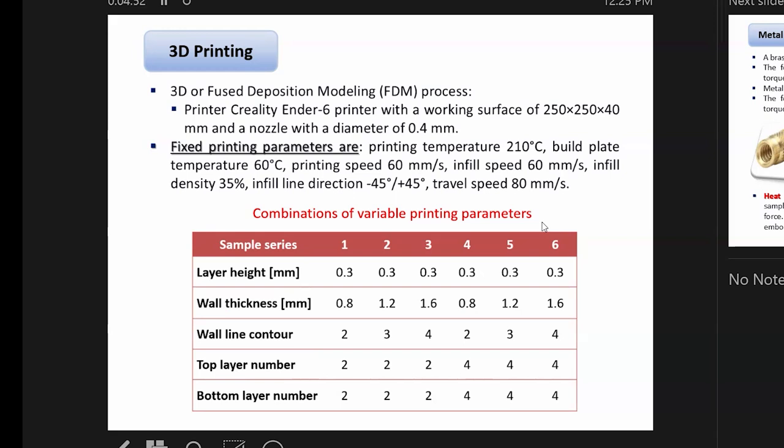In many literature sources, the best way of printing is layer height about 0.1 and infill density about 90%. 90% is theoretically the best way because it is approximately close to homogeneous material, as every specimen in 3D printing is an anisotropic construction.